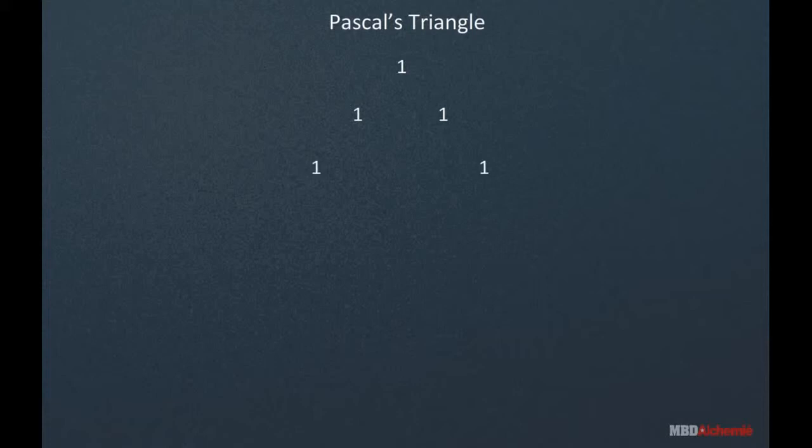In the next row, we put the two 1s at the corner. Then we take the sum of these two 1s in the middle. In the next row, we again take two 1s at the corner and then take the sum in the middle.